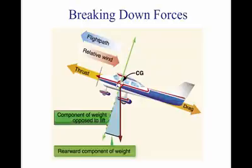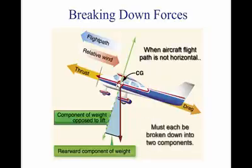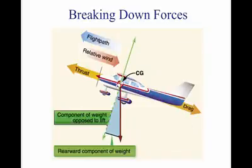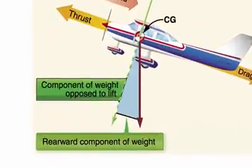Anytime the flight path of the aircraft is not horizontal, lift, weight, thrust, and drag vectors must each be broken down into two components. For example, during a glide, part of the weight of the aircraft points forward and therefore acts as thrust. Or, as the picture shows, during a climb, the weight can oppose lift and also thrust.